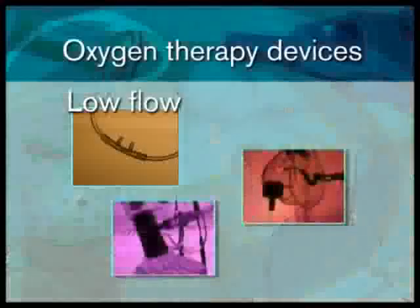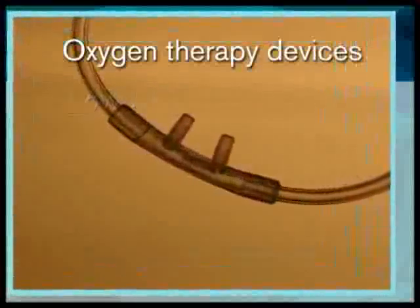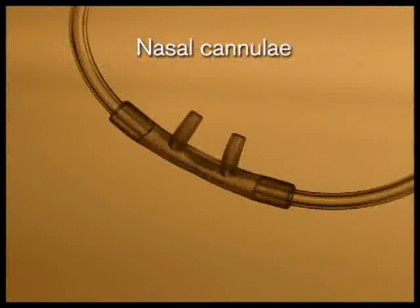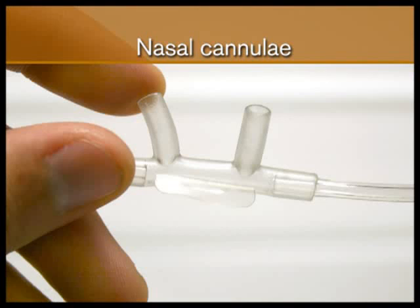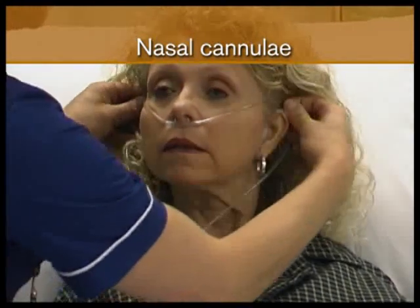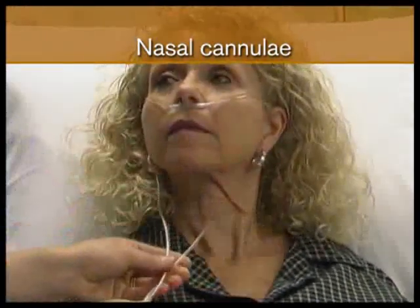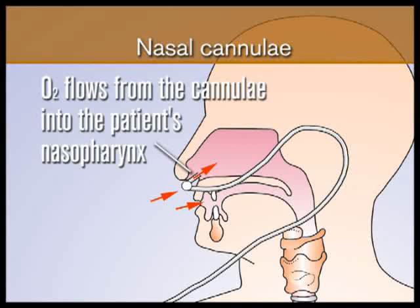Looking first at low flow devices, let's look at the various device options that are available. Nasal cannulae are one of the most common ways of delivering oxygen therapy. A nasal cannula consists of two soft prongs attached to the oxygen supply tubing. The prongs are inserted into the patient's nostrils. The tubing is looped over the patient's ears and the toggle is adjusted to ensure a good fit. Oxygen flows from the cannula into the patient's nasopharynx, which acts as an anatomic reservoir.